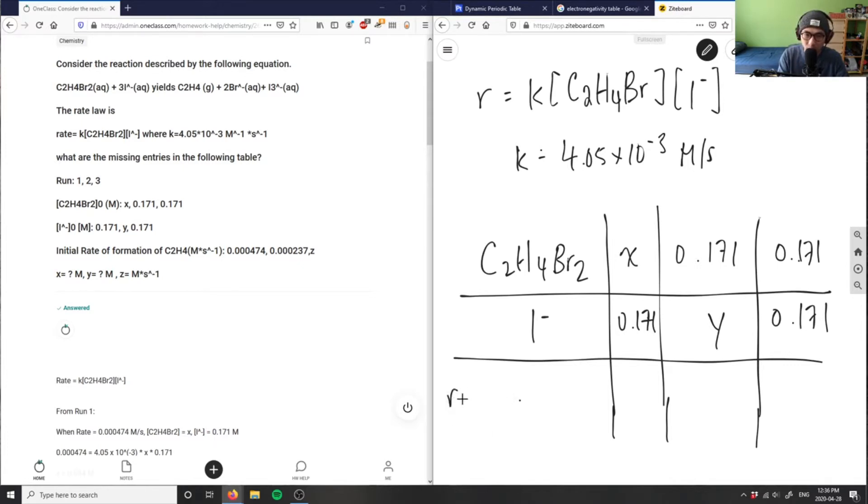C2H4 is equal to 0.000474. This would be under this column here: 0.000474, 0.000237, and Z here. So I'm asking what's X, Y, and Z? Okay.